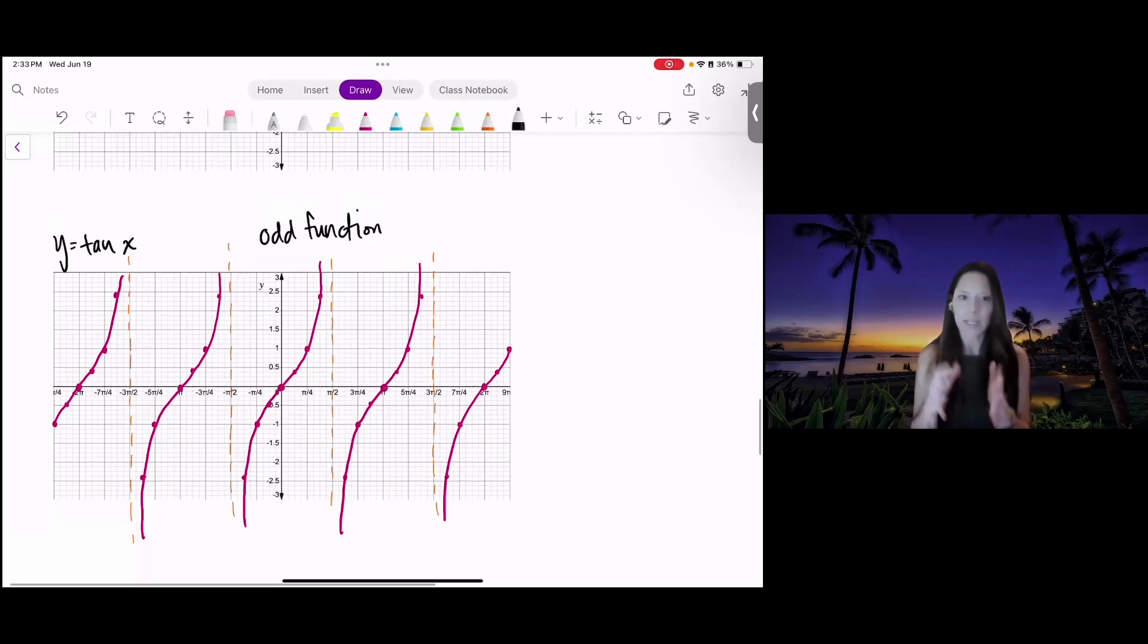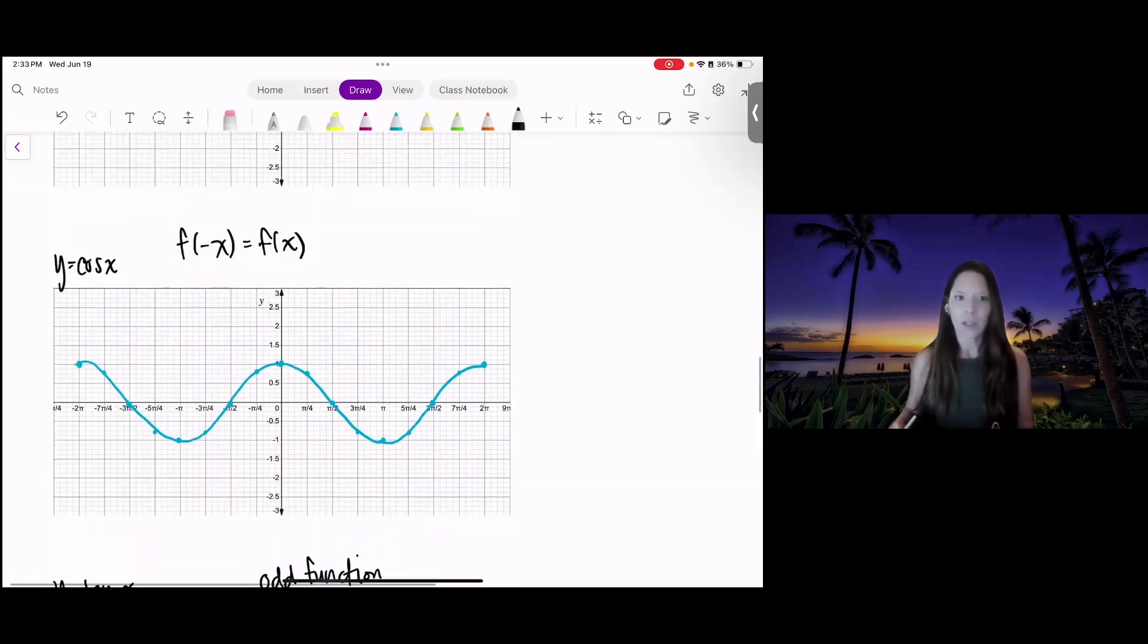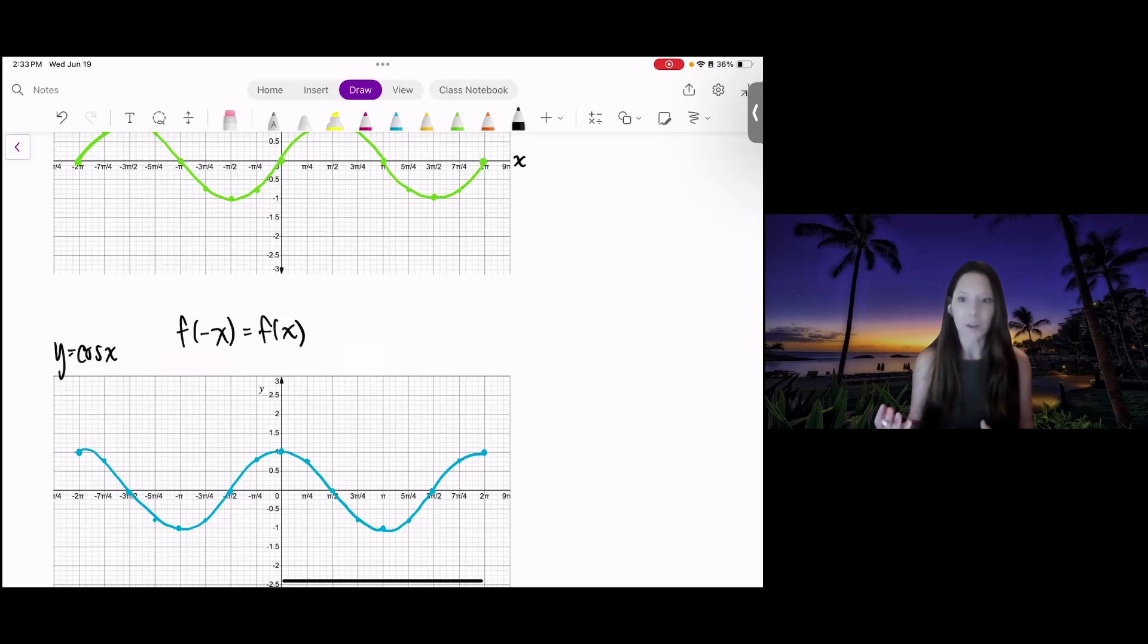If you look, this tangent repeats every pi interval. Sine and cosine repeat every 2 pi. We call that a period, and then their height we call amplitude.